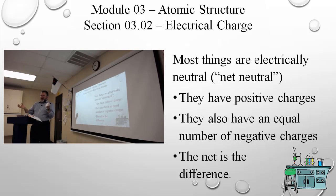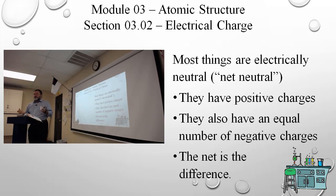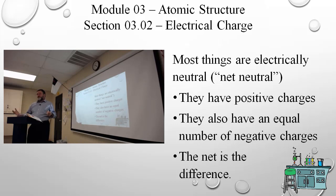It doesn't matter how many positives you have as long as you have the same number of negatives. If positives equal negatives, your net charge is zero. As soon as you have an inequality — more of one than the other — you take on a net charge. If I have five negative and six positive, I am positively charged — positive one — because my negatives are outnumbered by my positives by one charge. If you pick up a tennis ball and it has a zero net charge, that doesn't mean it has no charge — it means it's equally positive and negative. If it has a plus one charge, it's got one extra positive.